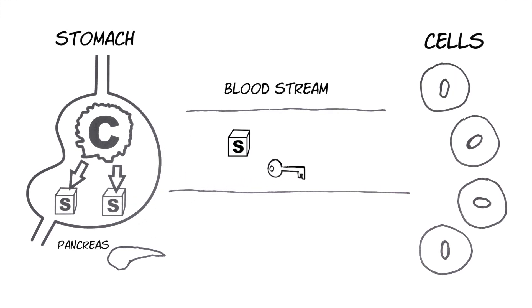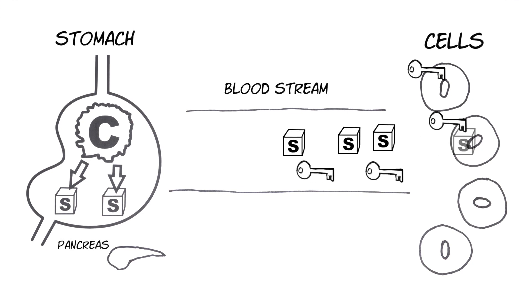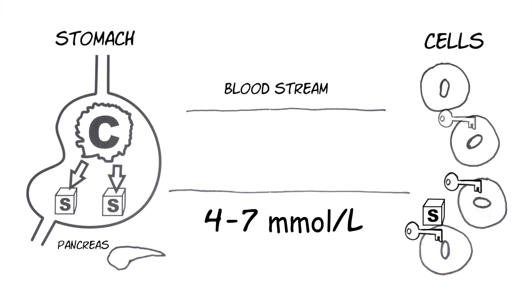When this process is working correctly, the sugar is able to exit the bloodstream at the cells. This keeps the amount of sugar in the blood at a normal level, between 4 and 7 millimoles per liter.